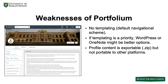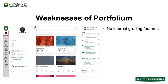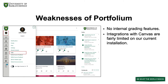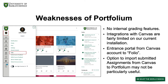Profile content is exportable in that you can download all the data as a zip file, but the content is not portable to other platforms. If freedom of portability is a priority, WordPress might be a better option. There are no internal grading features for Portfolium. While there are some integrations with Canvas, they are fairly limited on our current installation. There is a helpful entrance portal from your Canvas account which can take you into your Folio and Portfolium account using the same CAS authentication and single sign-on, and there is an option to import submitted assignments from Canvas to Portfolium. But given the number of clicks required, it's just as easy to upload projects directly to Portfolium, so this option might not be particularly useful.